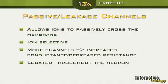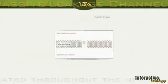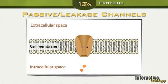These channels are located all throughout the neuron — from the soma to the dendrites, the axon, and the axon terminals. You're going to find these channels in all of those places. Let's look at a diagram of how this works.